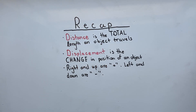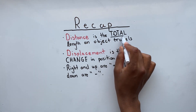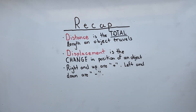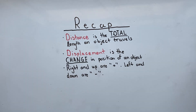In recap, distance is the total length an object travels, whereas displacement is the change in position of an object. Right and up are considered positive, and left and down are considered negative. Thank you for watching this video, and hope to see you next time.